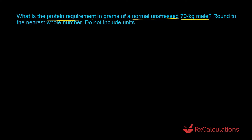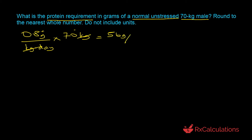It's important to stress that the purpose of protein in a TPN is not to produce energy but rather to build tissues and body strength. For a normal unstressed patient, the guidelines indicate 0.8 grams of protein per kilogram per day. Using dimensional analysis, we multiply 0.8 g/kg/day by 70 kilograms — the kilograms cancel out — giving 56 grams of protein per day.